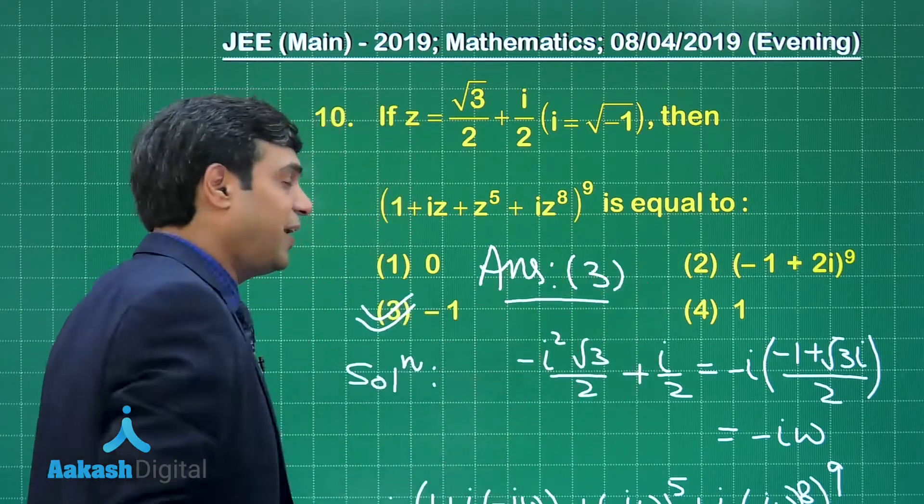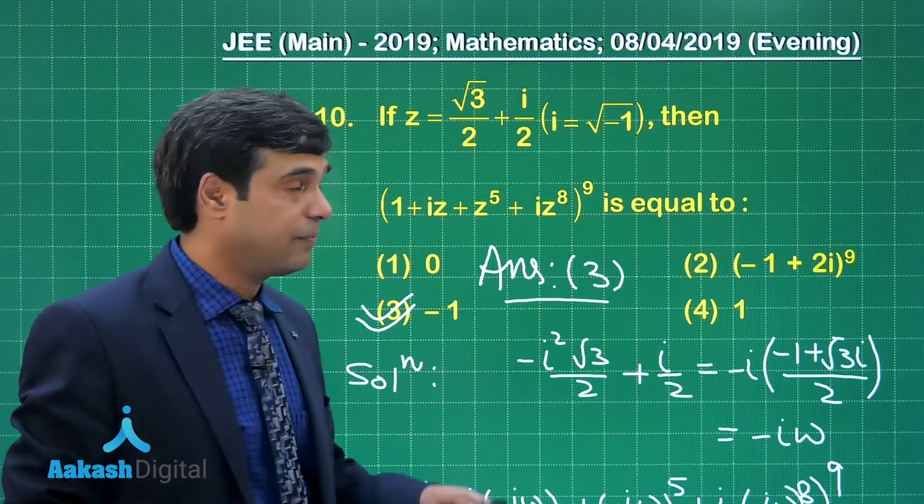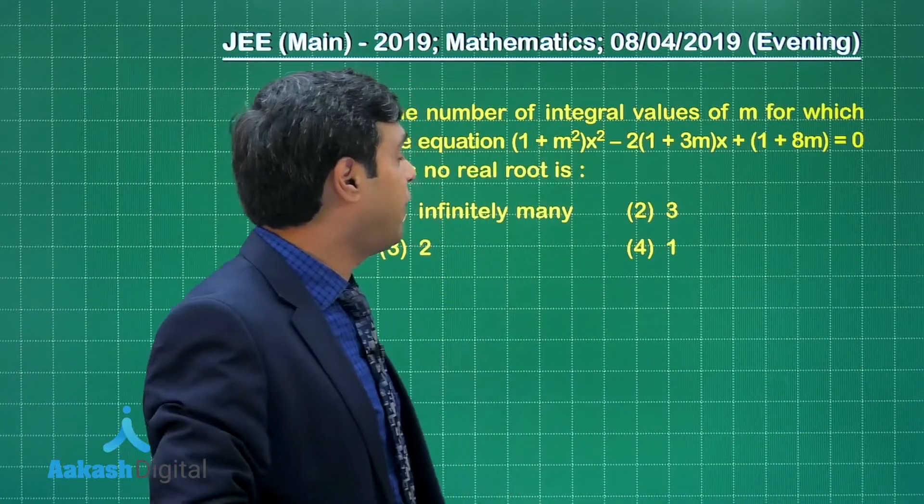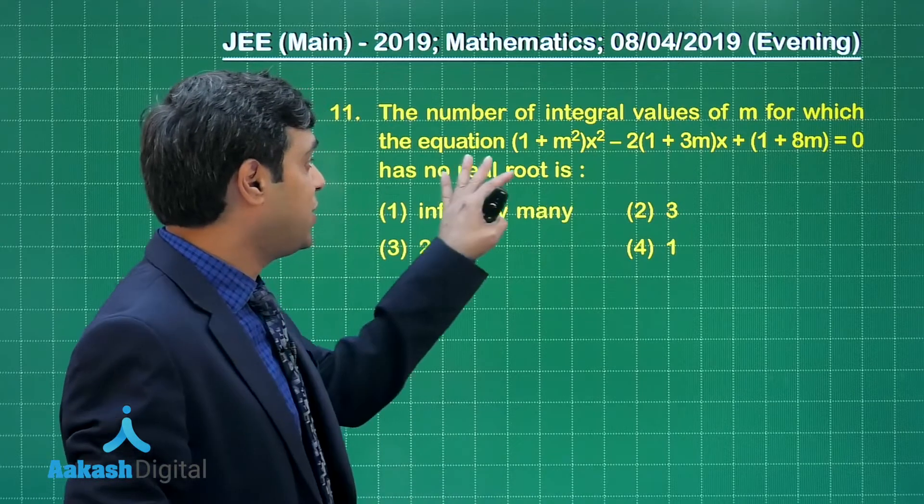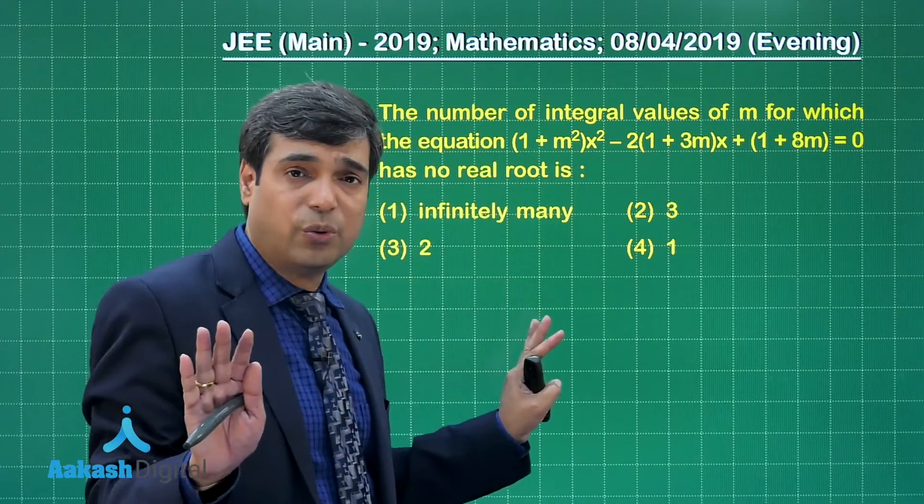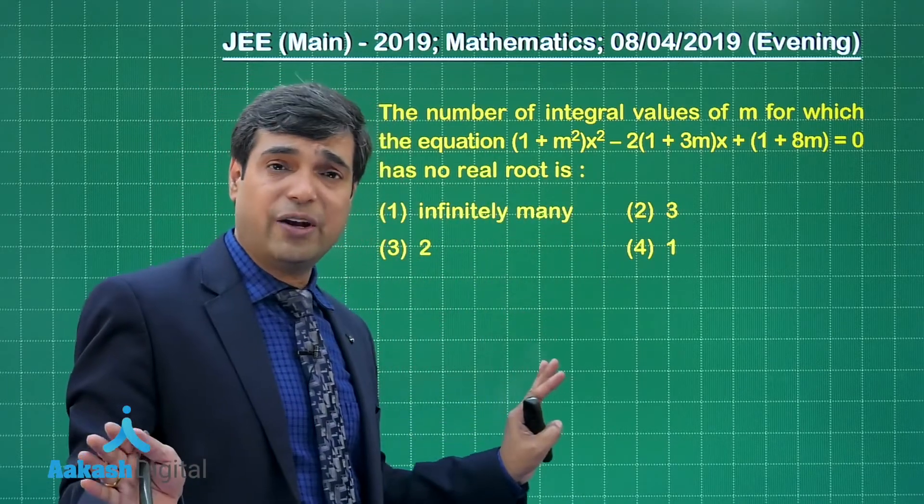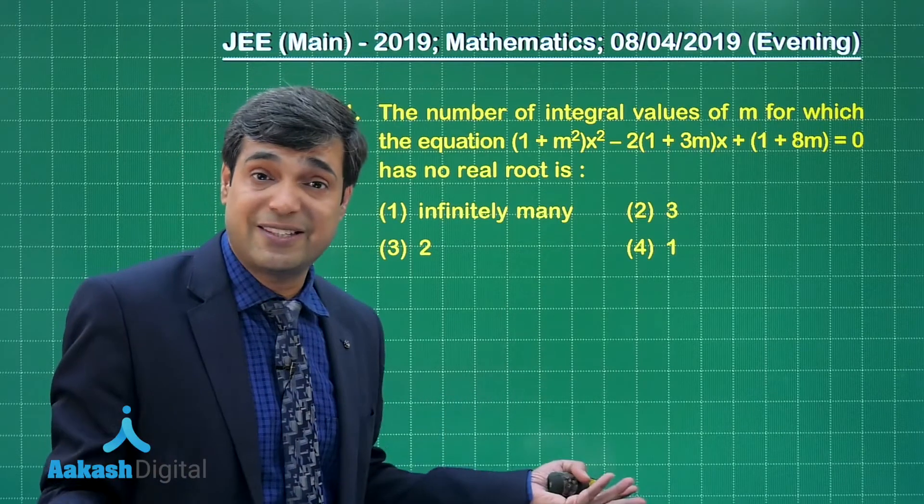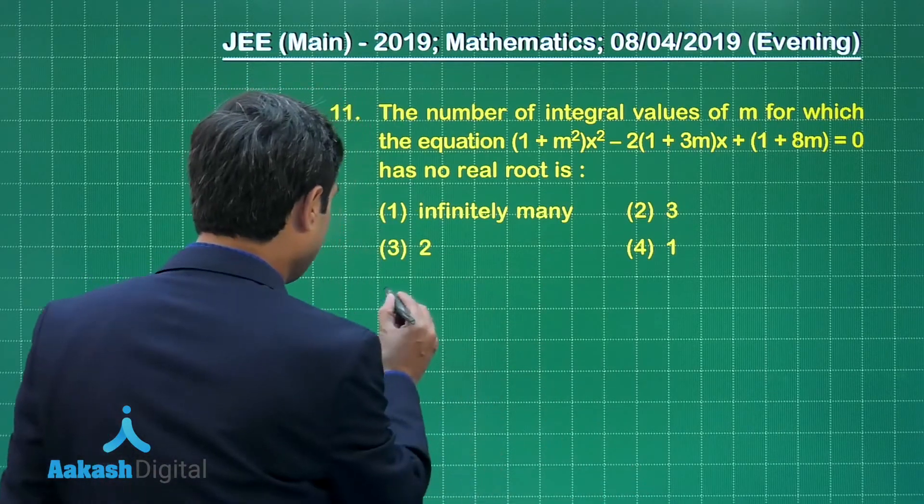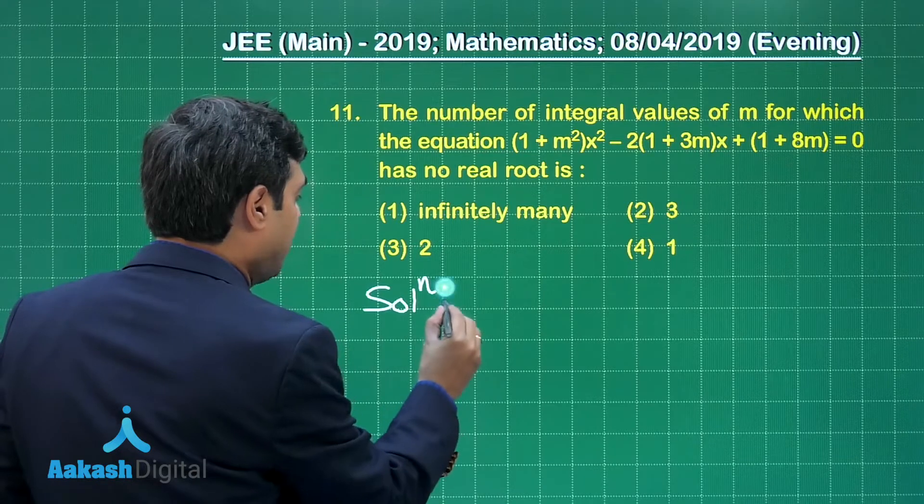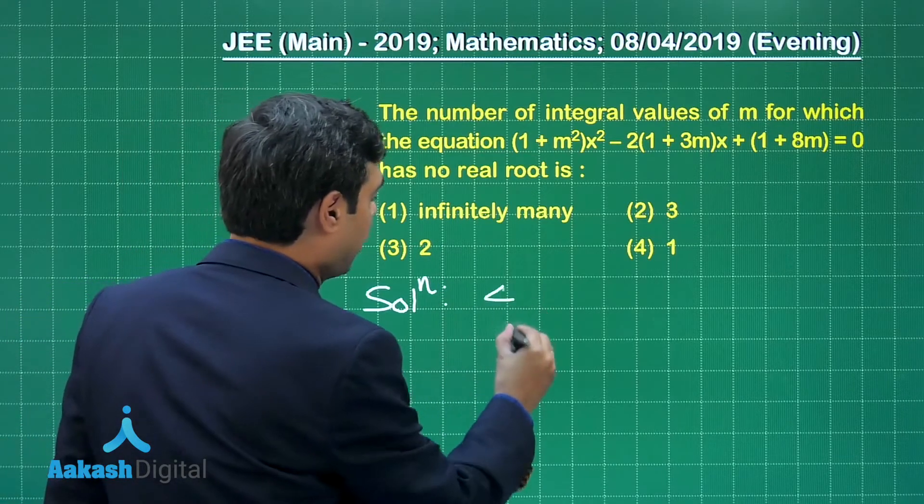Let us move on to the next one, that is question number 11. The number of integral values of m for which the equation (1 + 3m)² - 2(1 + 3m)x + (1 + 8m) = 0 has no real root. Simple. No real root meaning discriminant should be less than 0.